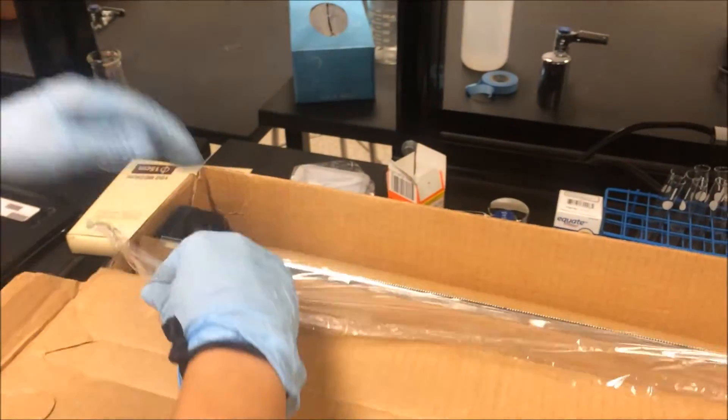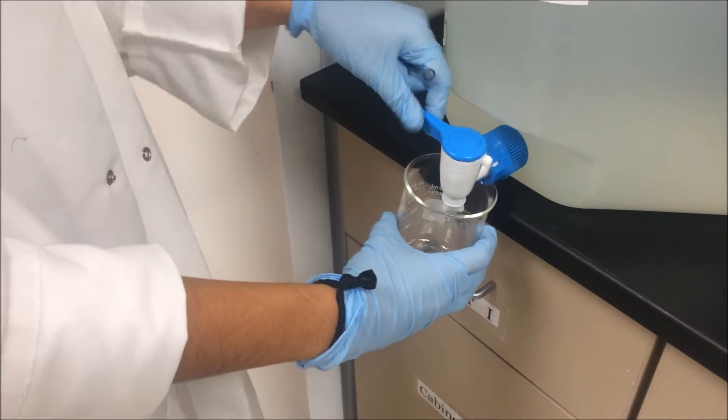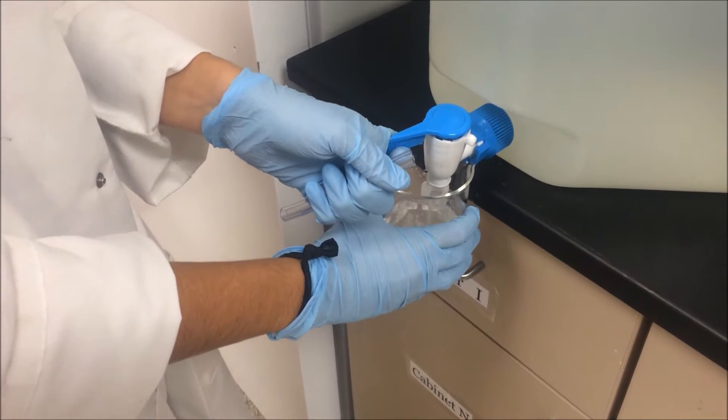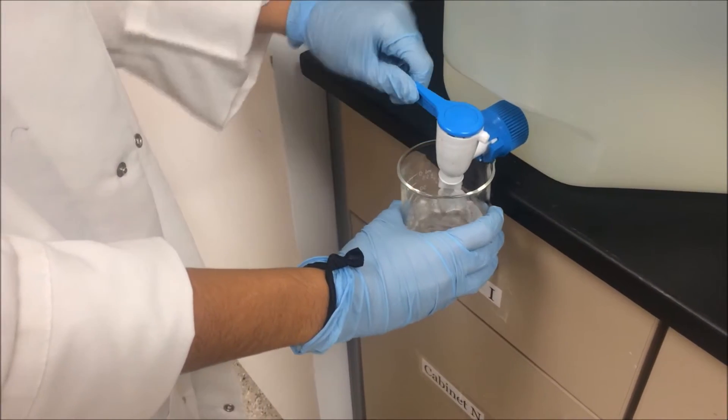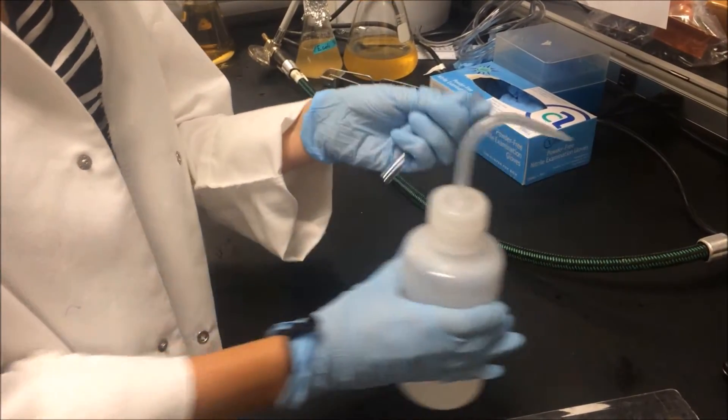Tear two pieces of plastic wrap. Get 100 milliliters of distilled water. Sterilize the tube with 70% ethanol.